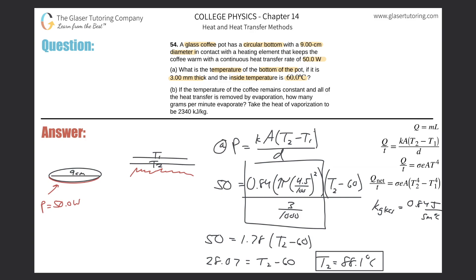And then how about part B? If the temperature of the coffee pot remains constant and all of the heat transfer is removed by evaporation, how many grams per minute evaporate? Take the heat of vaporization to be this.